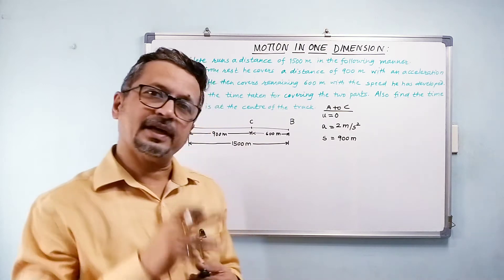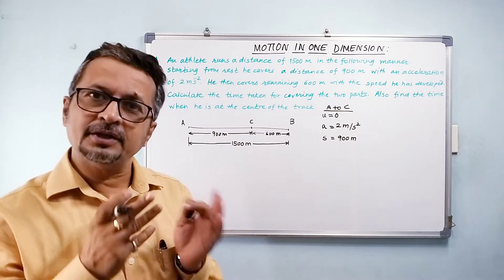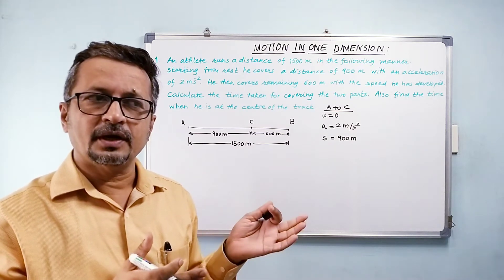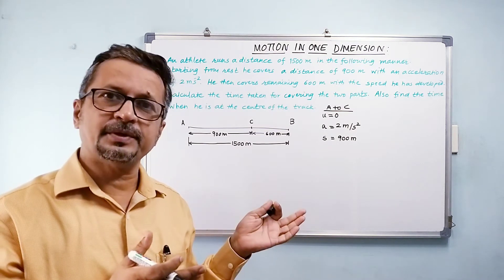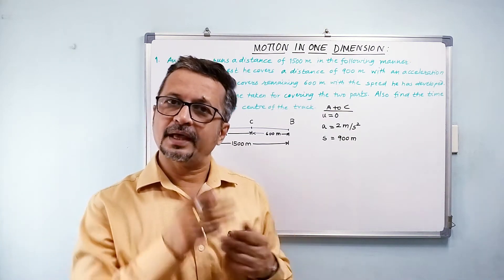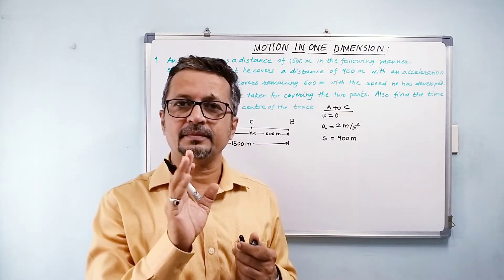What about the second equation? Second equation is s equals ut plus half at squared. I know that my initial velocity is 0. And displacement that is 900 meters, that I know. And acceleration I know. I don't know time. So can I find out time? I can do that. And that is what I need to do.